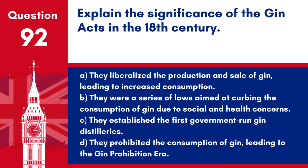Question 92. Explain the significance of the Gin Acts in the 18th century. a. They liberalised the production and sale of gin, leading to increased consumption. b. They were a series of laws aimed at curbing the consumption of gin due to social and health concerns. c. They established the first government-run gin distilleries. d. They prohibited the consumption of gin, leading to a gin prohibition era. Answer: b. The Gin Acts were significant for attempting to control the widespread consumption of gin in the 18th century, which was seen as a cause of social decay and health problems among the population.